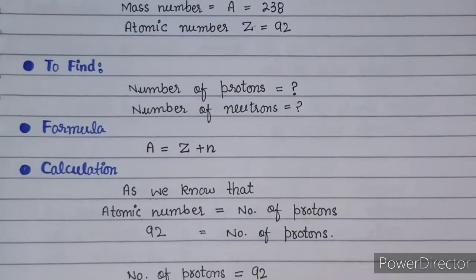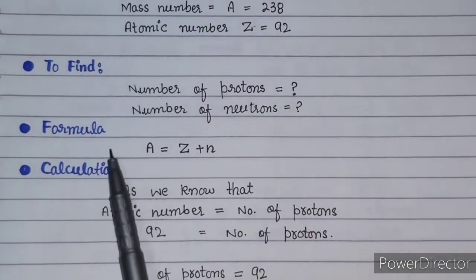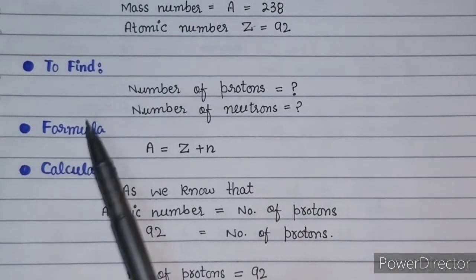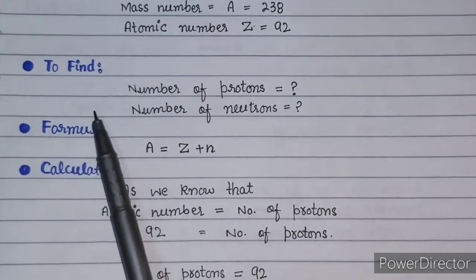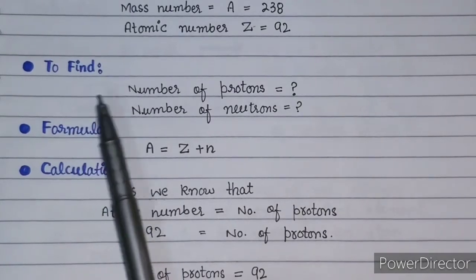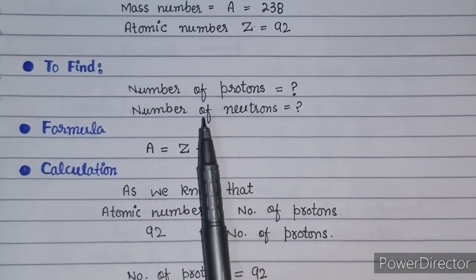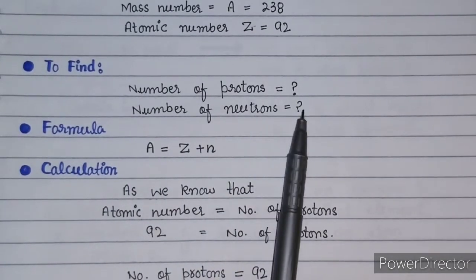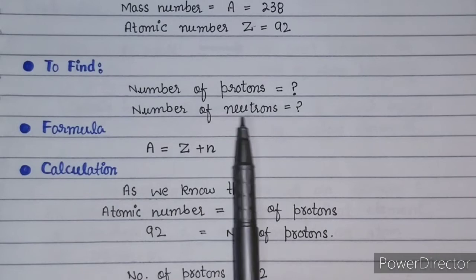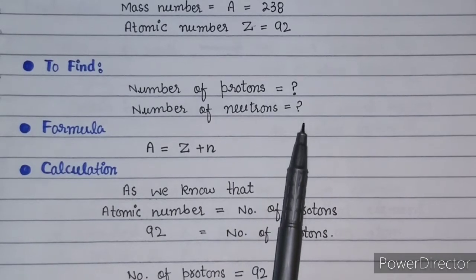The next heading is 'To Find.' What do we need to find? Number of protons is to find. Number of neutrons is to find.